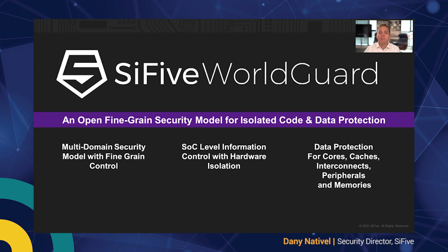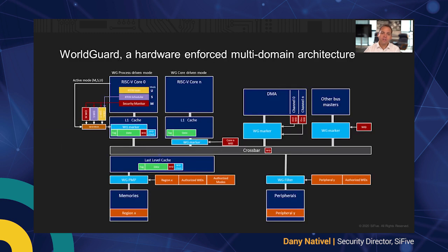Before showing how WorldGuard can be used to emulate ARM TrustZone, let me give you a quick refresher on how WorldGuard actually works. WorldGuard is a relatively simple mechanism that tags or marks all transactions issued by a core or any other bus master, such as a DMA controller or FPGA. An ID called WorldID is added to the transactions and is propagated through the different caches and interconnects. At a destination, we find filters that enforce access control policy against a list of authorized WorldIDs. A WorldID filter enables fine-grained access control on a peripheral that can be exclusive to a WorldID or shared between different WorldIDs.